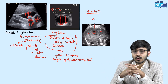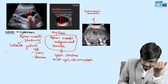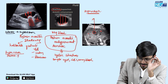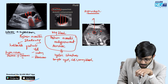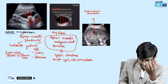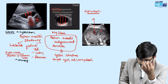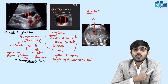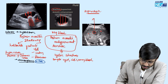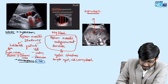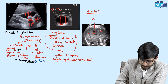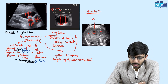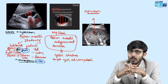Hyperechoic lesions are very few. In the liver, stones are very hyperechoic with posterior acoustic shadowing. Another hyperechoic lesion in the liver is a hemangioma — liver hemangiomas are hyperechoic but do not show any posterior acoustic enhancement. Another hyperechoic structure in the kidney is an angiomyolipoma, which also appears hyperechoic and does not show any posterior acoustic shadowing. This is a brief overview of hyperechoic, hypoechoic, and anechoic structures on ultrasound.